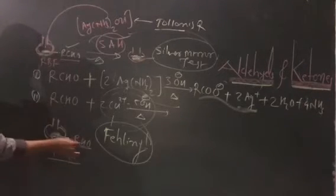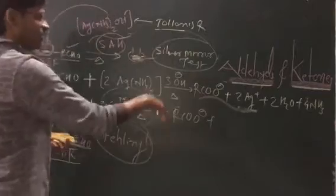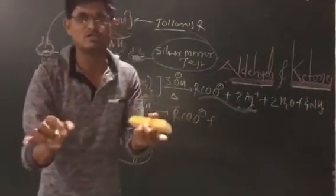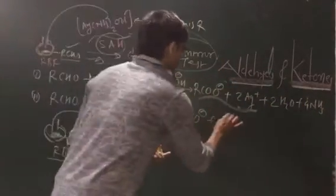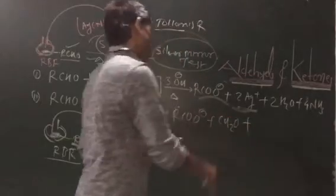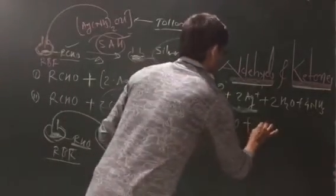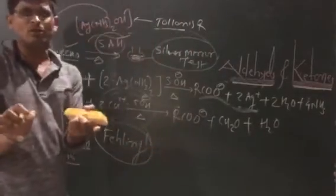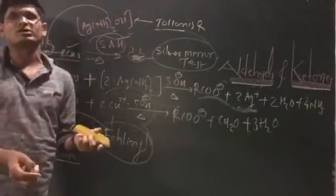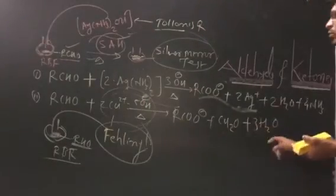After addition of Fehling's solution to the round bottom flask containing aldehyde, the formation of RCOO⁻ (carboxylate ion) is observed. This is the oxidation of aldehyde to carboxylate ion, plus Cu₂O (cuprous oxide), plus water molecules — about three moles of hydroxide and water molecules are involved in this reaction.